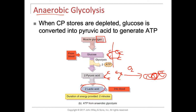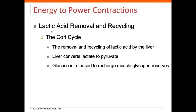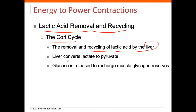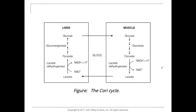Now, lactic acid — most people think it creates a burn in your muscles, and you can get muscle cramping as a result of it. So we have to talk about the lactic acid removal and recycling of lactic acid. We call this the Cori cycle — the removal and the recycling of lactic acid by the liver. The liver converts lactic acid to pyruvate, and glucose is released to recharge the muscle glycogen reserves.